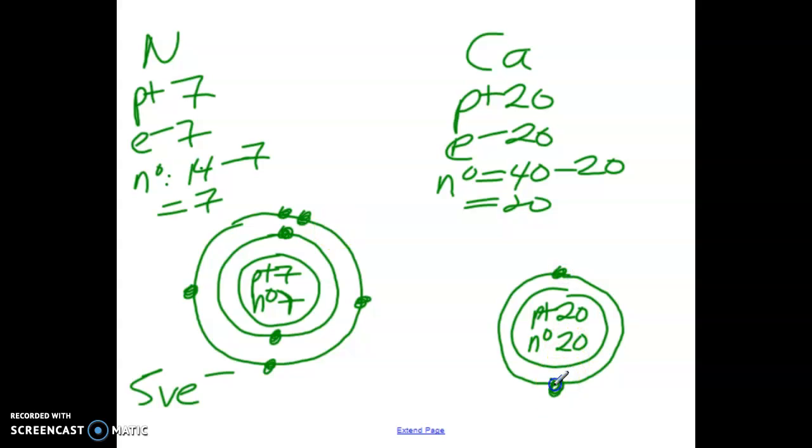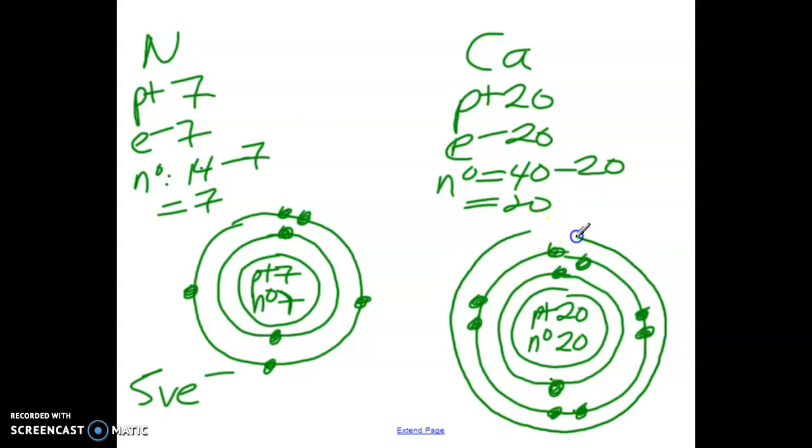So we have 1, 2, then we have another one that's going to be full. So we're going to have 1, 2, 3, 4, 5, 6, 7, 8. And then we need to keep going because that's only 10. So we're going to draw another one. This one is also going to be full. That's going to get us to 18.